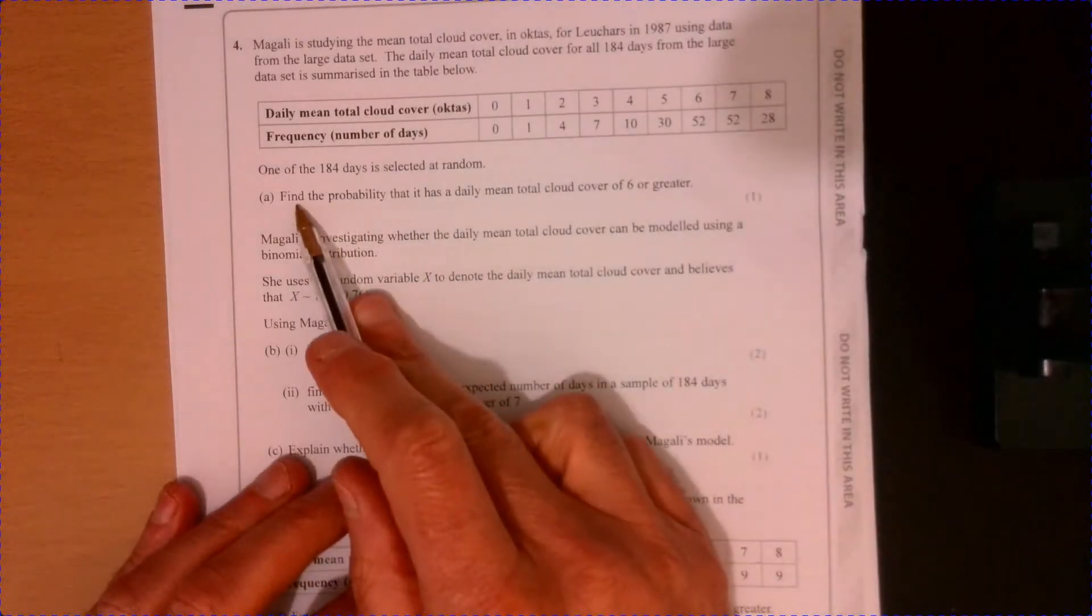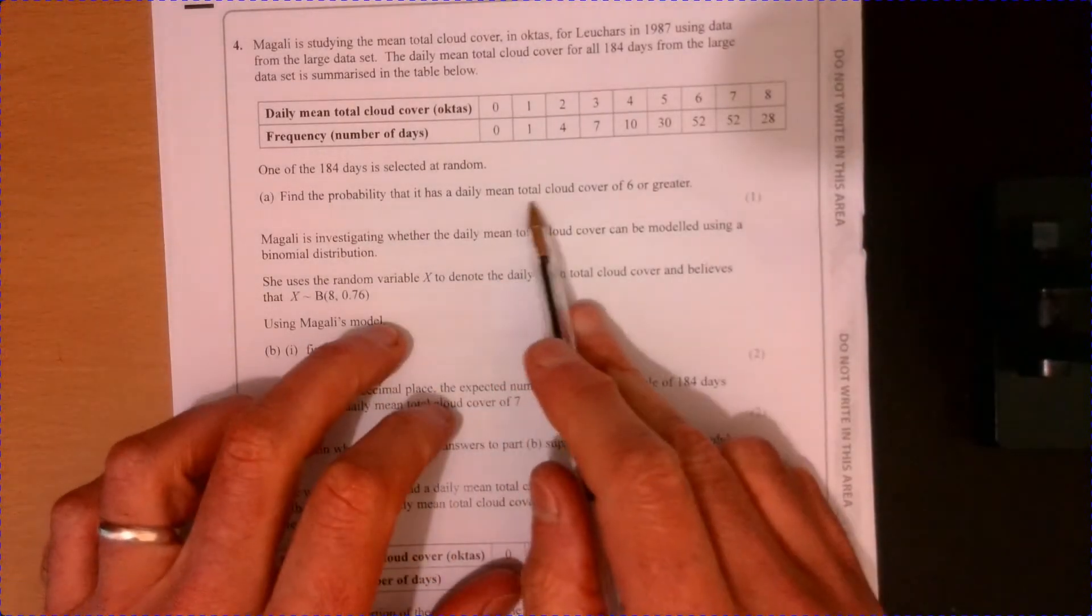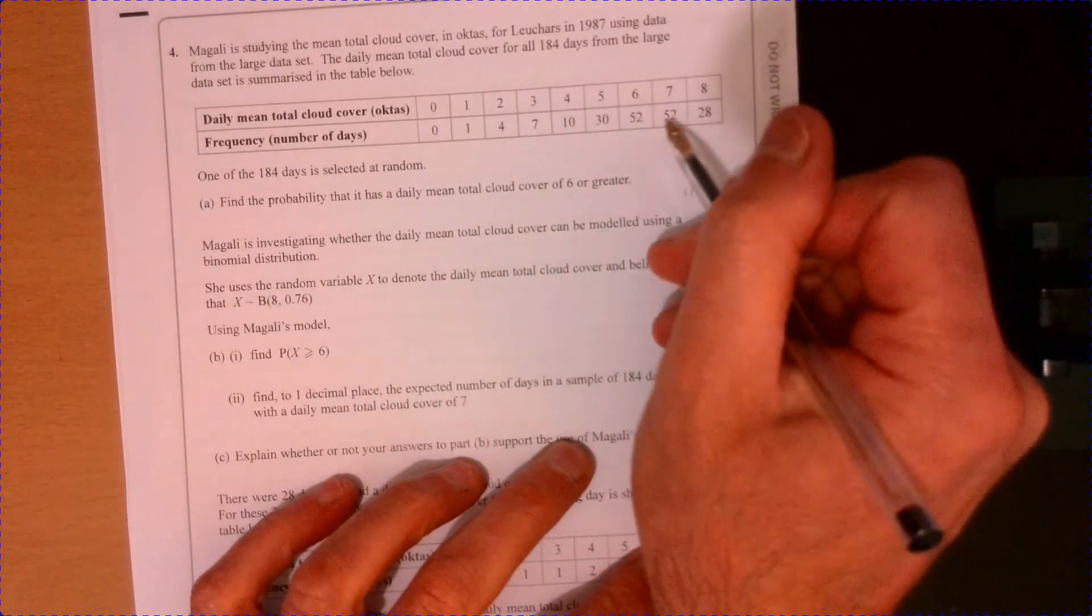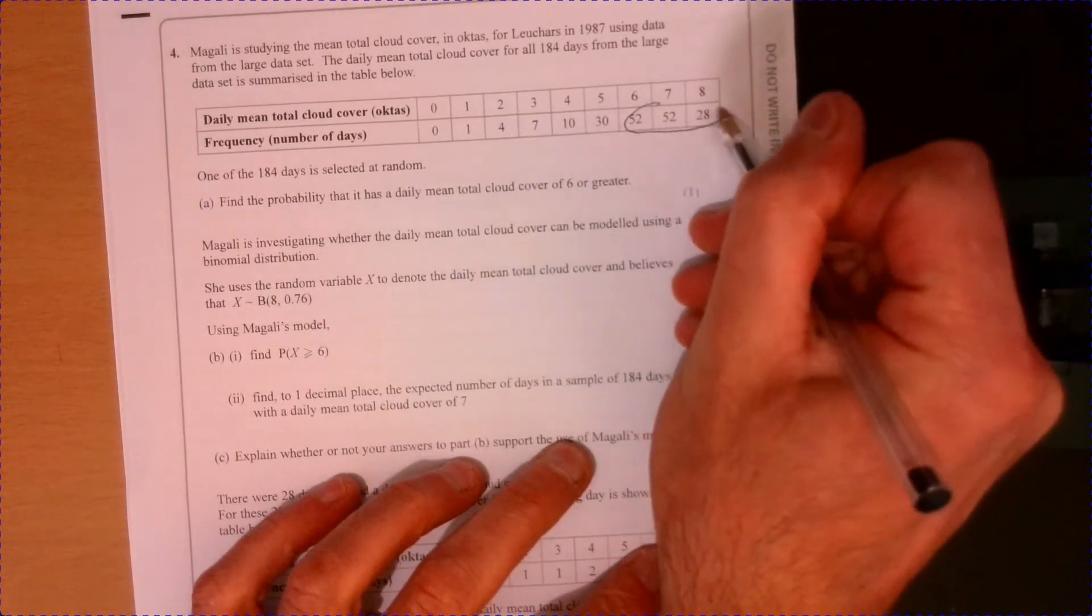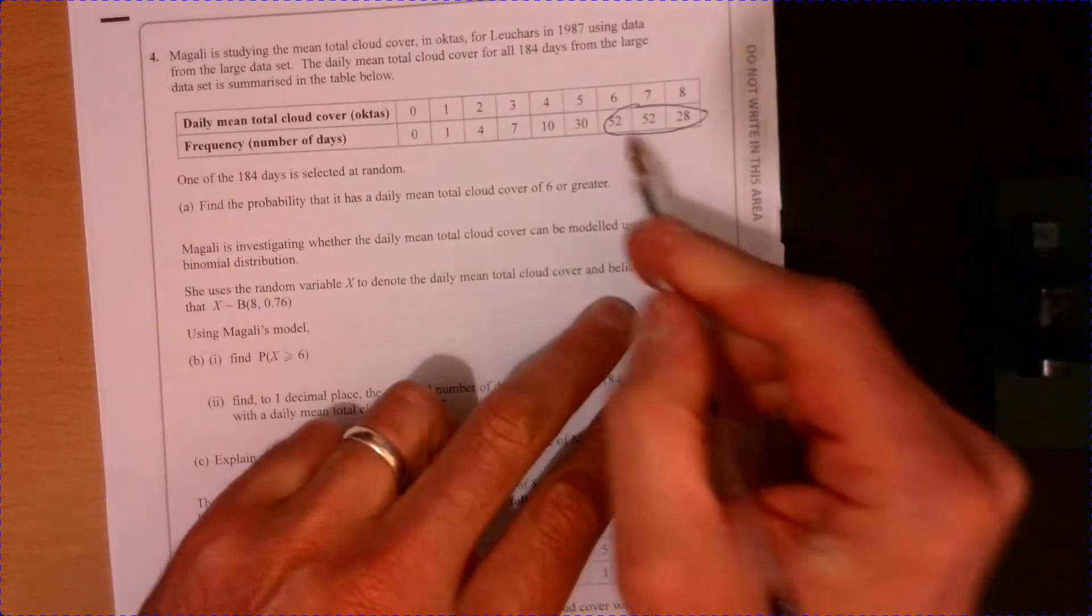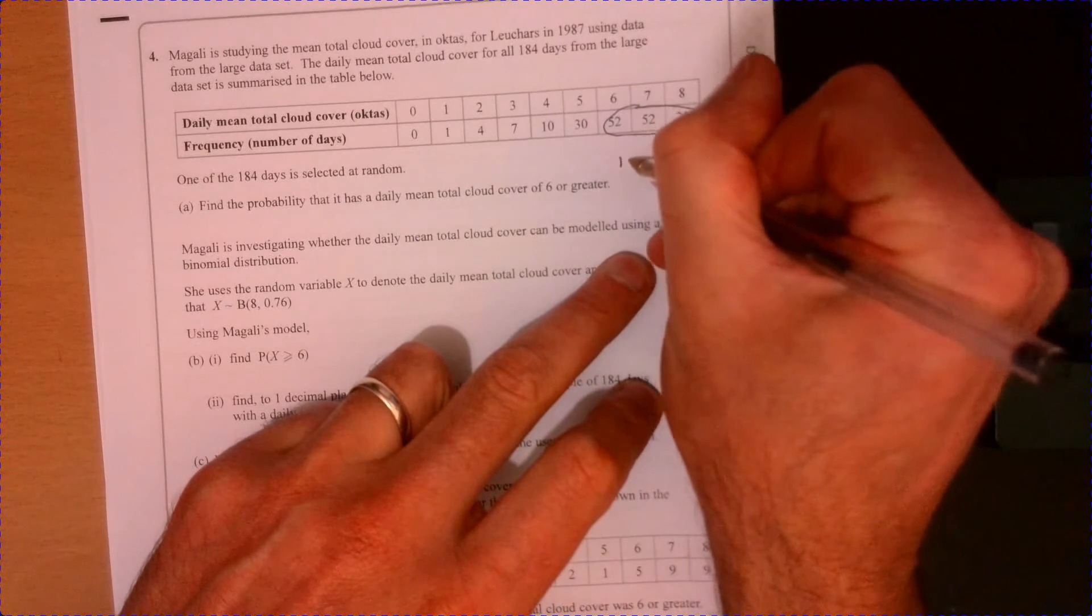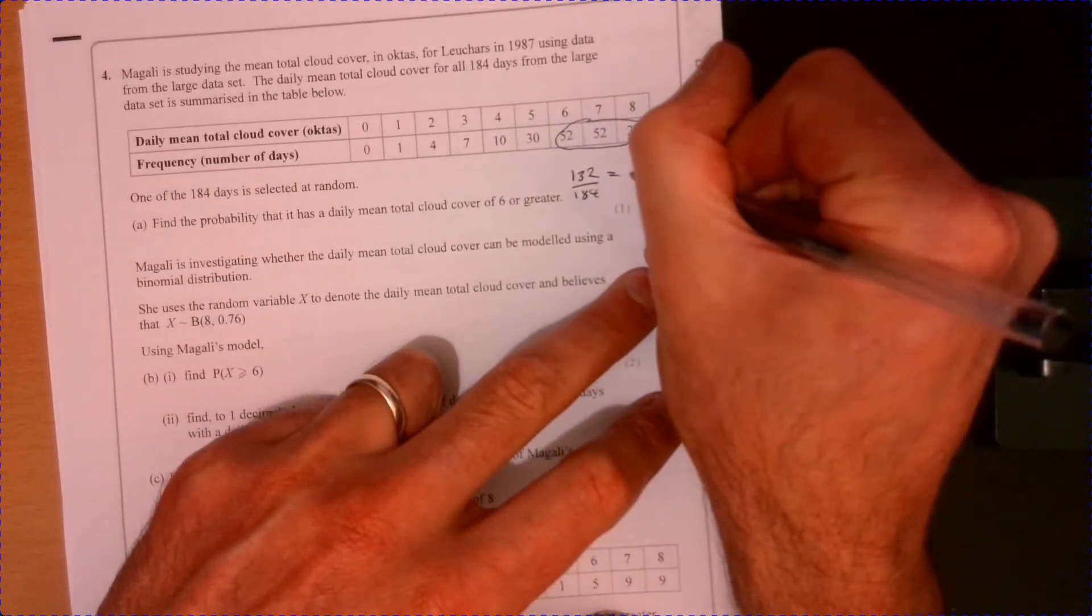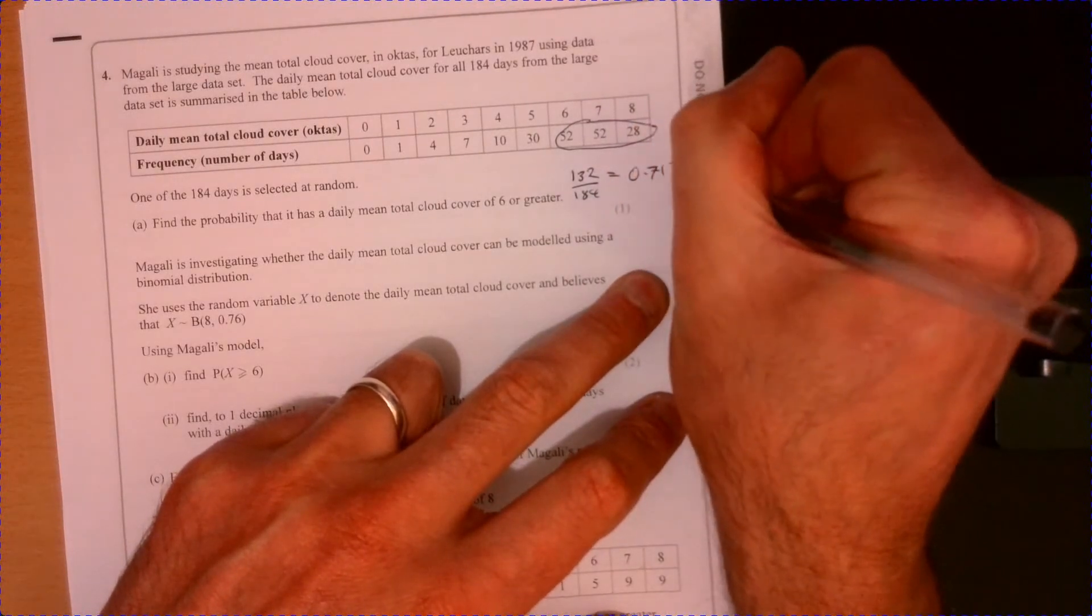Question four, so I find the probability that has a daily mean total cloud cover of six or greater. So that's just talking about these guys just here, over 184. So if we add those together, that's 132 over 184. You might want to put that as a decimal, 0.717.